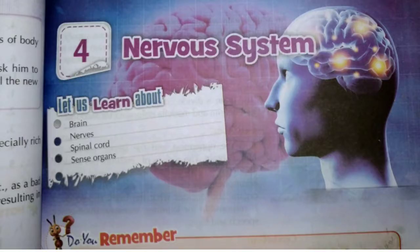Hi, my kids. Today we will study Spinal Cord and Reflex Action. This is our fourth session in this chapter. Our nervous system — the most important organ system — is our nervous system. We have studied the brain and nerves. In the last session we discussed different types of nerves.